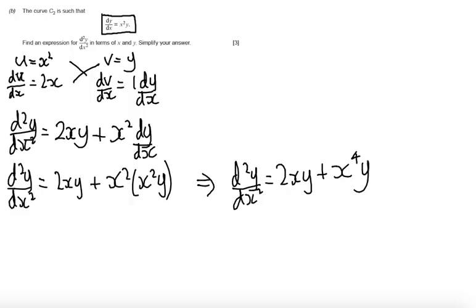Looking at part B, what we get is a standalone mark if you get to this line where you've differentiated to get the second derivative, it's 2xy + x² dy/dx. Next, there is a method mark for substituting in the value of the expression for dy/dx. And finally, there is an answer mark if you have got to the correct expression not involving any values of dy/dx.